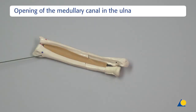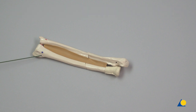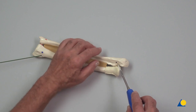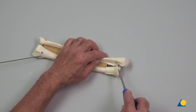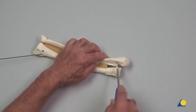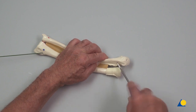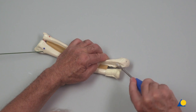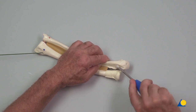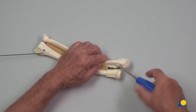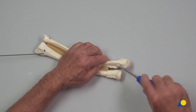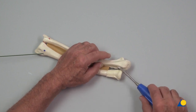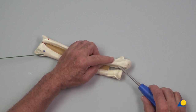Opening of the medullary canal in the ulna: the awl is inserted perpendicular to the bone and a central mark is made with oscillating movements. Once the awl has secured a purchase in the bone, it is lowered to an angle of 45 degrees in relation to the shaft axis and the bone is perforated at an upward angle. It is crucial not to penetrate the opposite cortex.